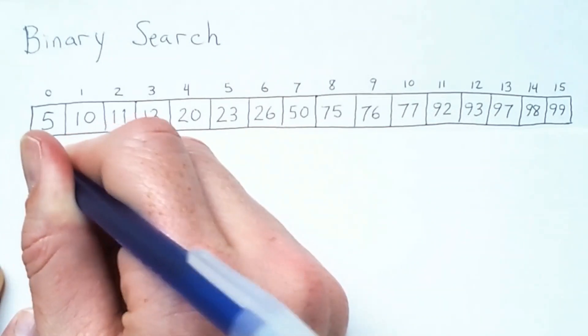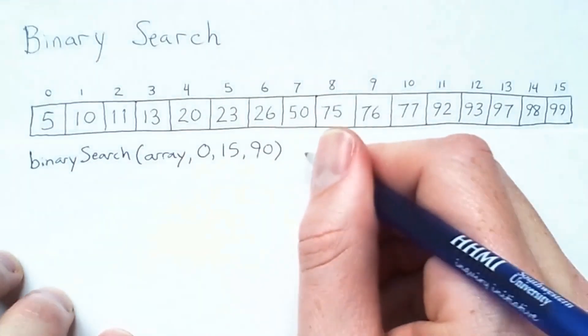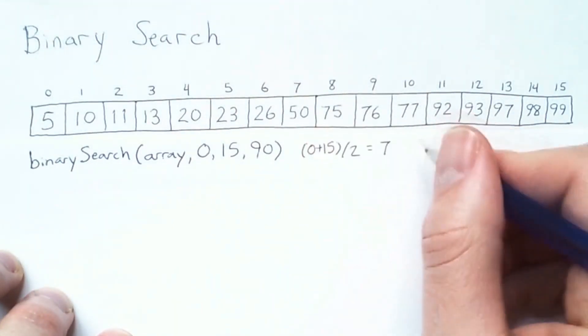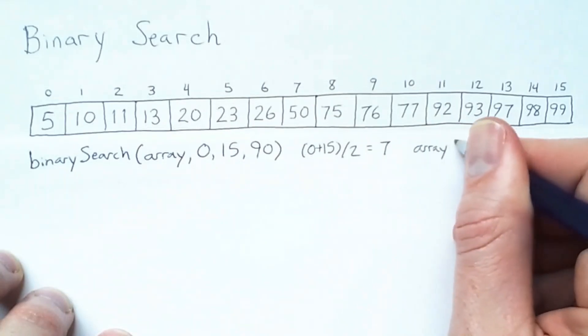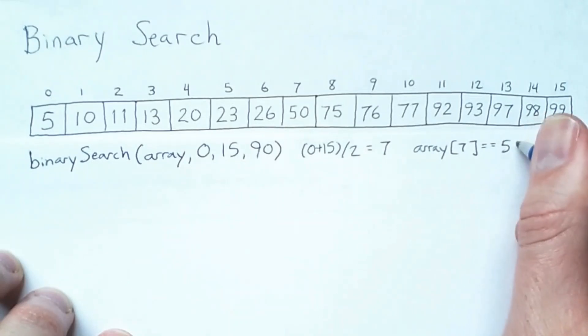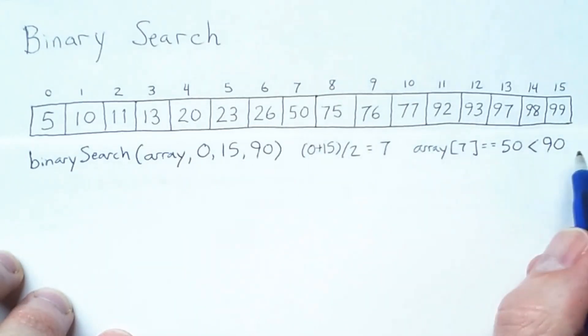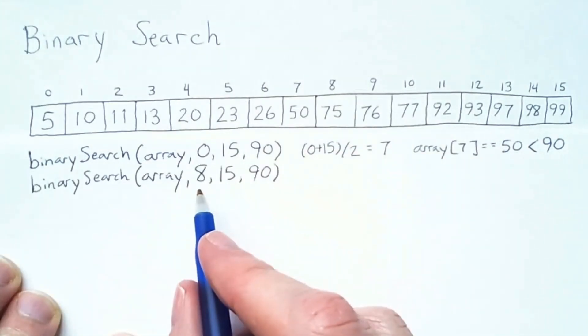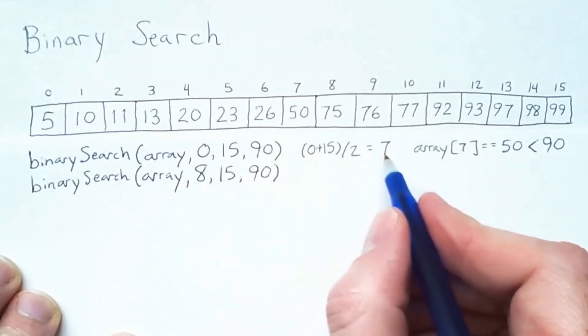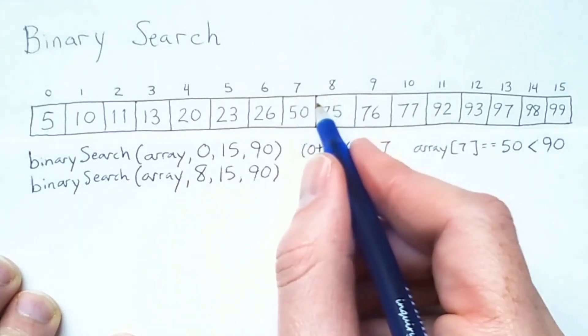We start off by searching the whole range. We once again compute the midpoint, and check that value. 50 is less than 90, so we will search for 90 to the right. Now our sub range is 8 to 15, because 7 was the midpoint index we checked before, and 8 is directly after that.